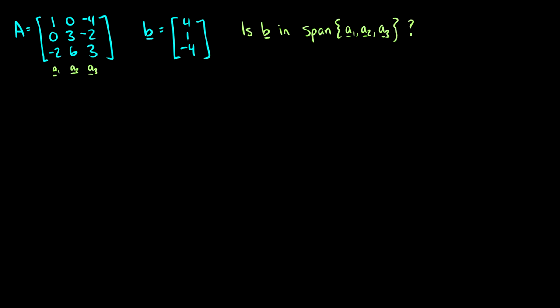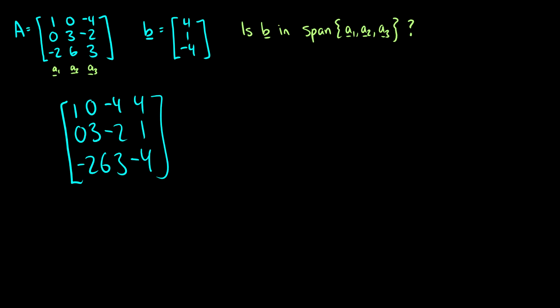Here's a question: given matrix A and vector B, is B in the span of A1, A2, and A3? This is exactly what we did in the previous video — asking if B is a linear combination of A1, A2, and A3. If B is in the span, then B is a linear combination of A1, A2, and A3. So we make a matrix and solve it to answer the question.